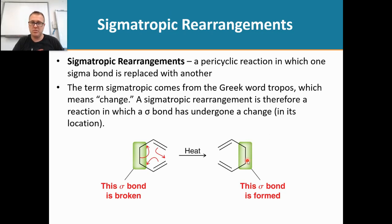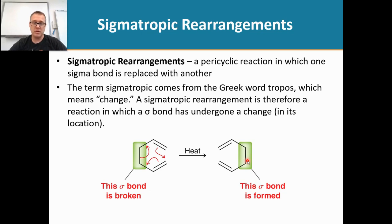Overall, we have the same amount of sigma bonds and the same amount of pi bonds — it's just that we're switching them around. The term sigmatropic comes from the Greek word 'tropos', which means change, so we're just changing that sigma bond around.